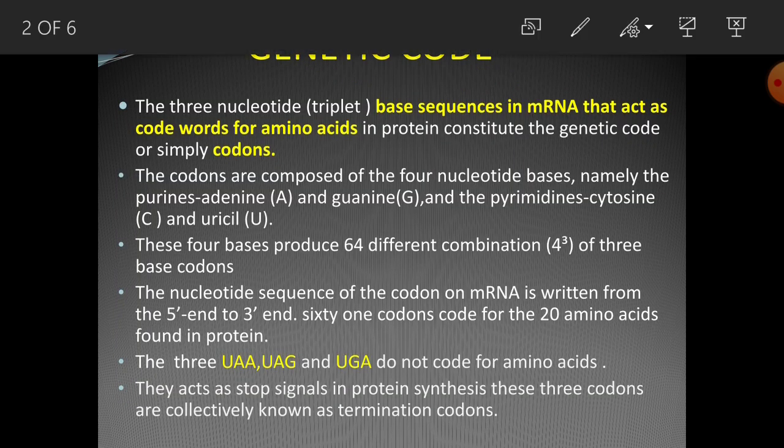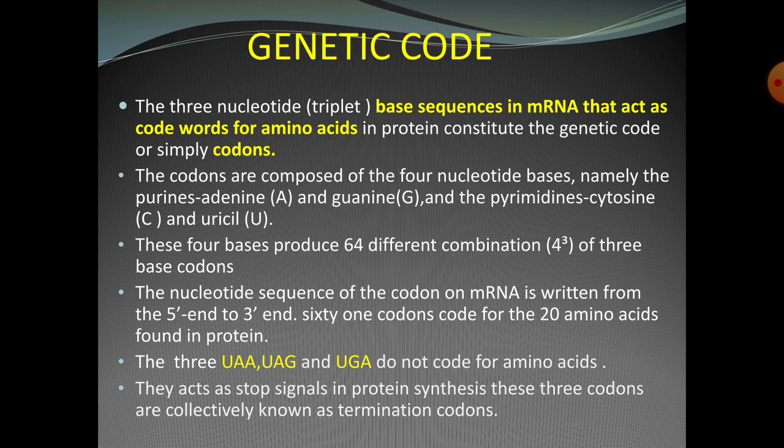The code is composed of codons. Each codon is composed of three bases, and each codon is translated into an amino acid. This base sequence in mRNA acts as a code word for amino acids in protein — these are the genetic codons. The codons are composed of four nucleotide bases: the purines adenine and guanine, and the pyrimidines cytosine and uracil. The four bases produce 64 codon combinations — four cubed — from the three-base codons.